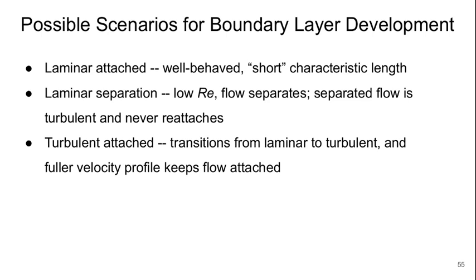We can have turbulent attached boundary layers where the flow transitions from laminar to turbulent and that fuller velocity profile helps keep the flow attached all the way to the back of our body.